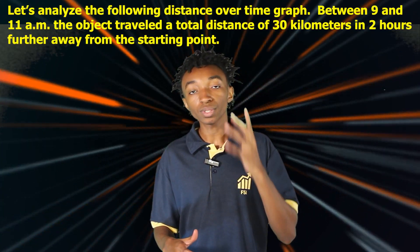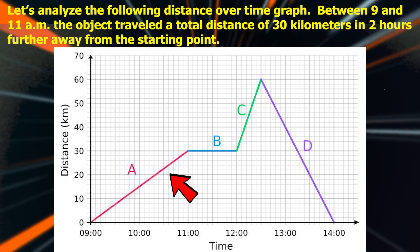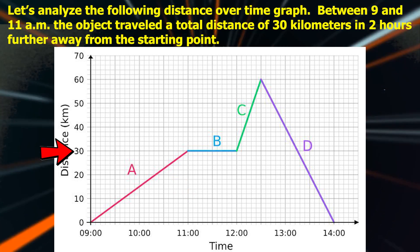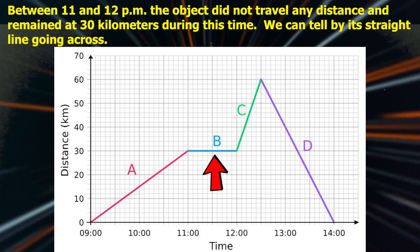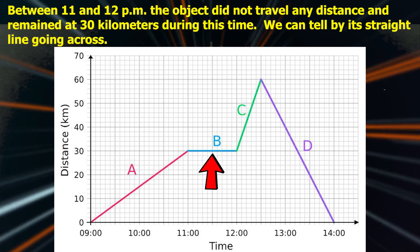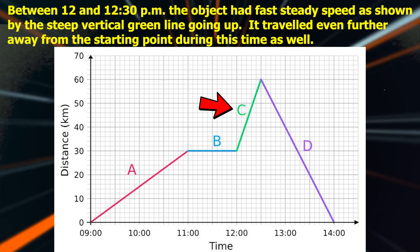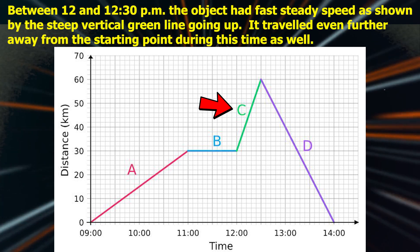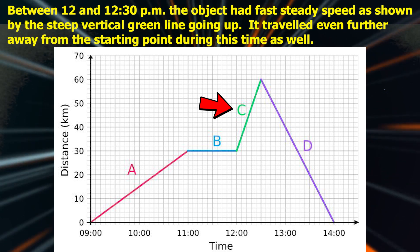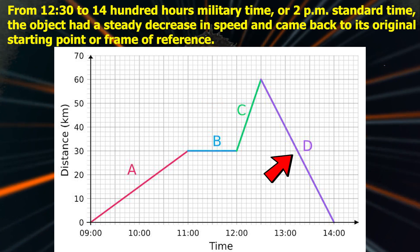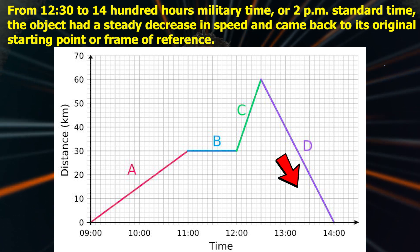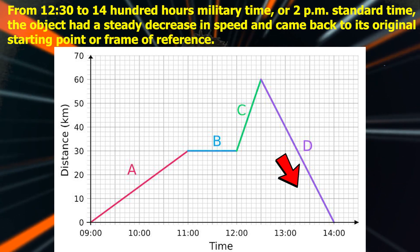Let's analyze the following distance over time graph. Between 9 and 11 a.m., the object traveled a total distance of 30 kilometers, moving further from the starting point. Between 11 a.m. and 2 p.m., the object did not travel any distance and remained at 30 kilometers — shown by a straight horizontal line. Between 12 and 12:30 p.m., the object has a fast steady speed, shown by the steep vertical green line going up, traveling even further from the starting point. From 12:30 to 14:00 hours (2 p.m. standard time), the object had a steady decrease in speed and came back to its original starting point, or frame of reference.